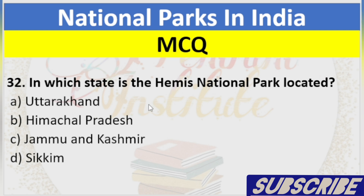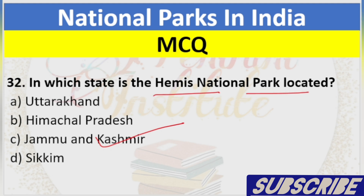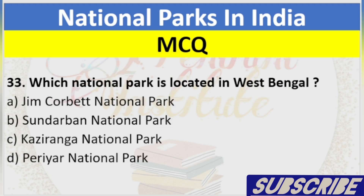Question 32: In which state is the Hemis National Park located? A. Uttarakhand, B. Himachal Pradesh, C. Jammu and Kashmir, D. Sikkim. Answer: C. Jammu and Kashmir.